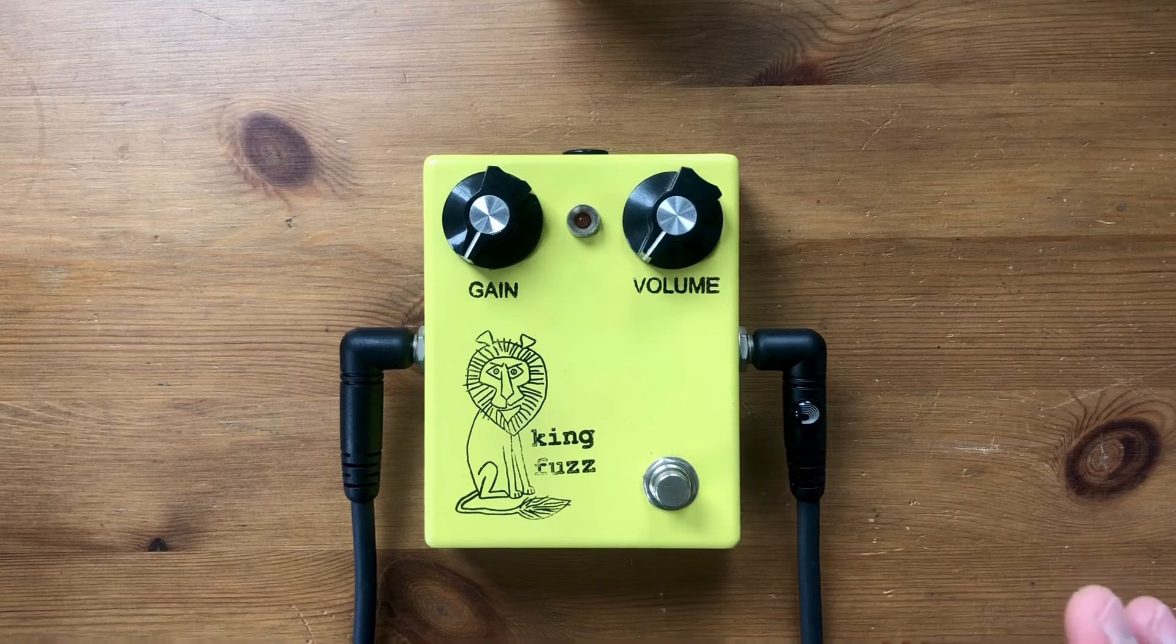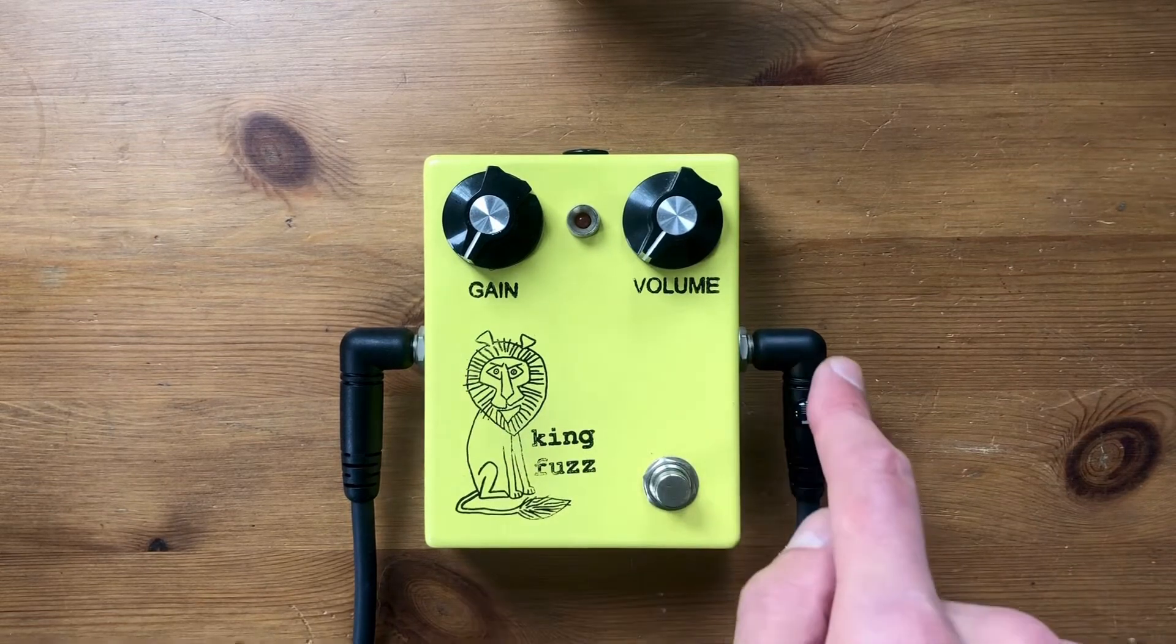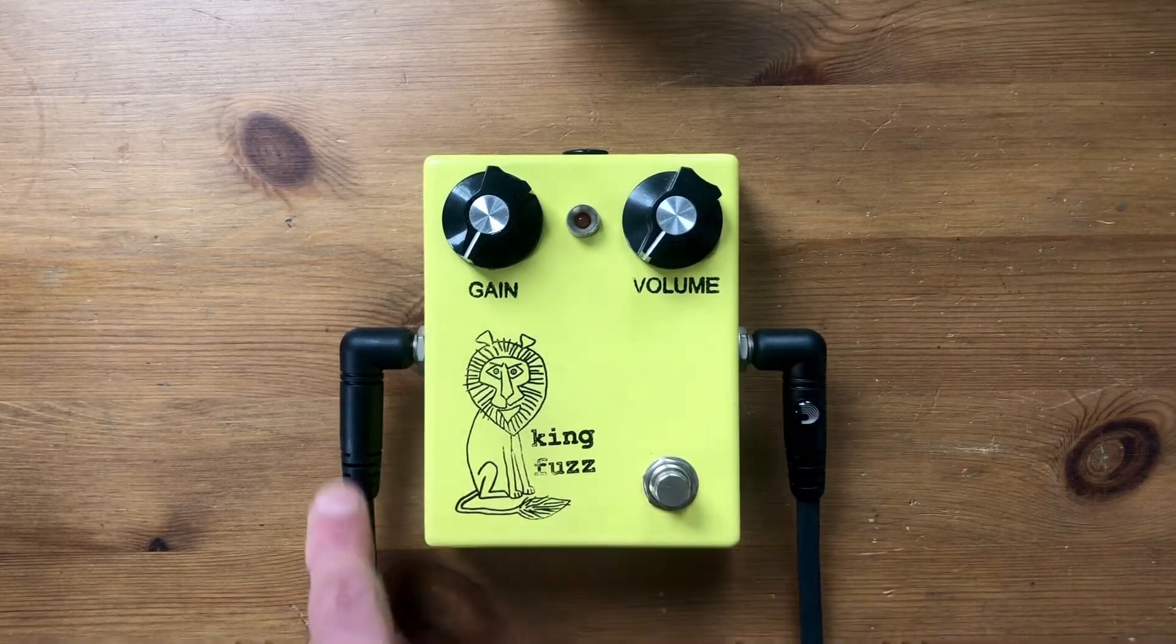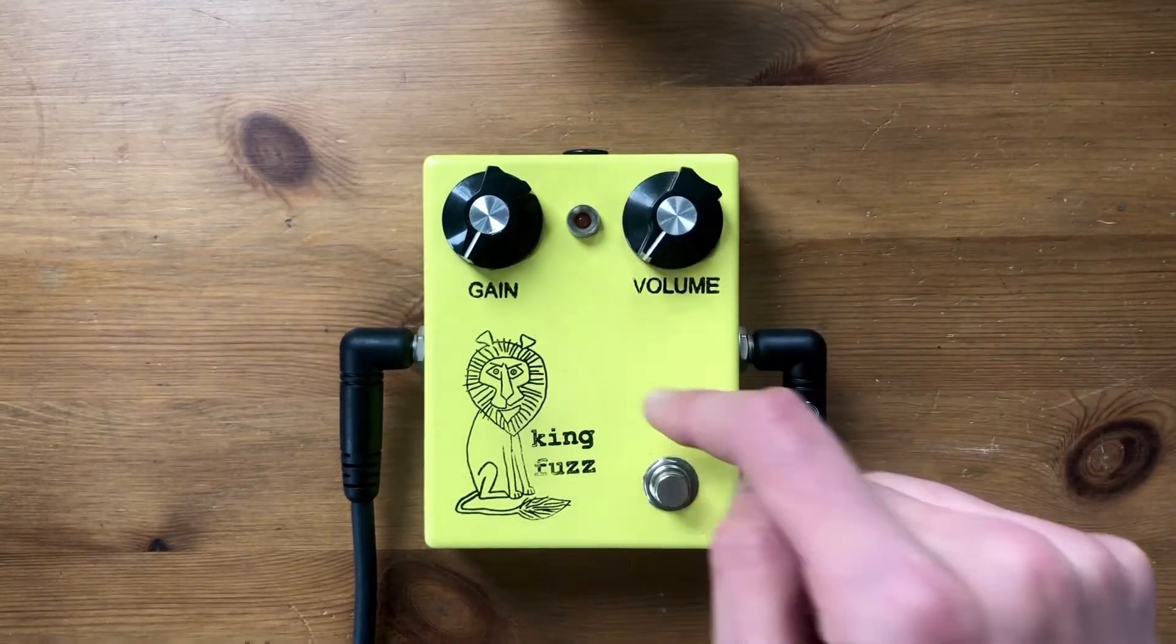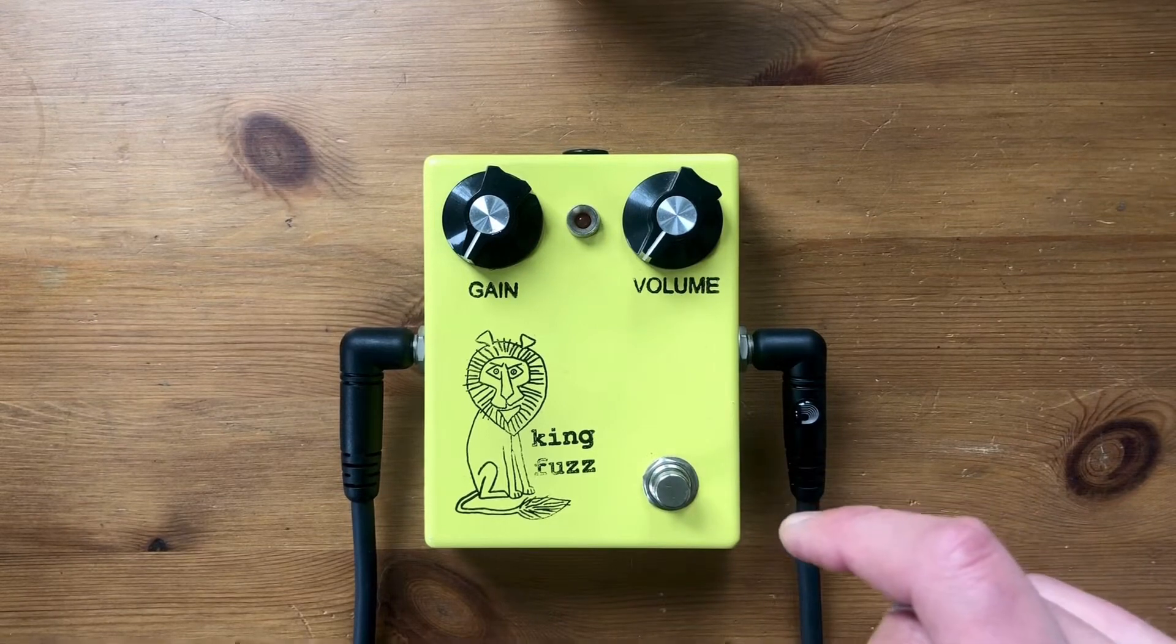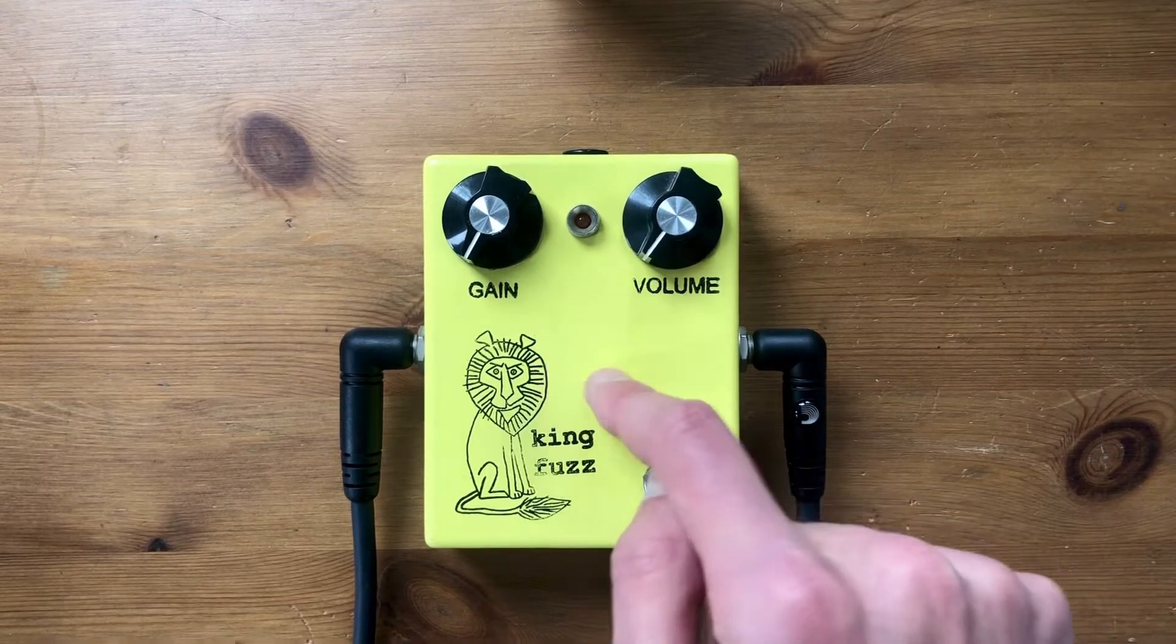Then unplug the power, and if you can still hear your guitar signal coming through the amplifier, it's true bypass. If unplugging the power mutes your signal, it means it's buffered.